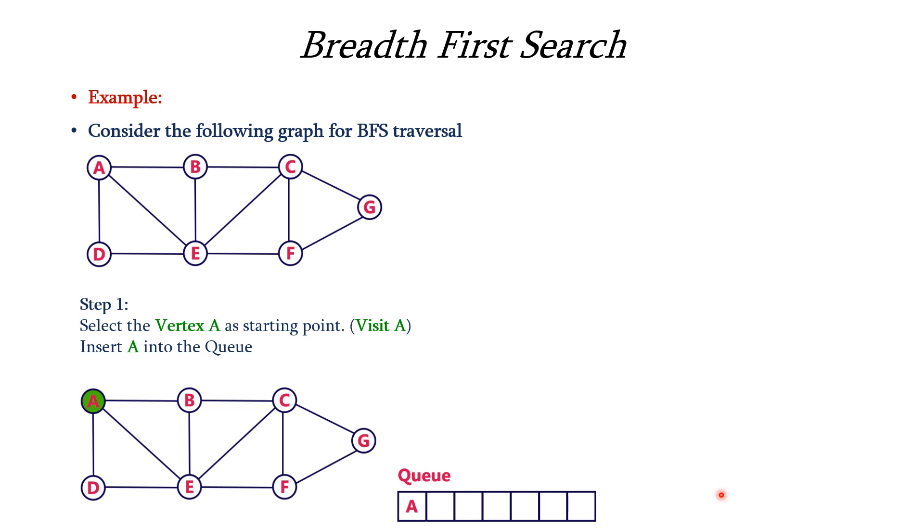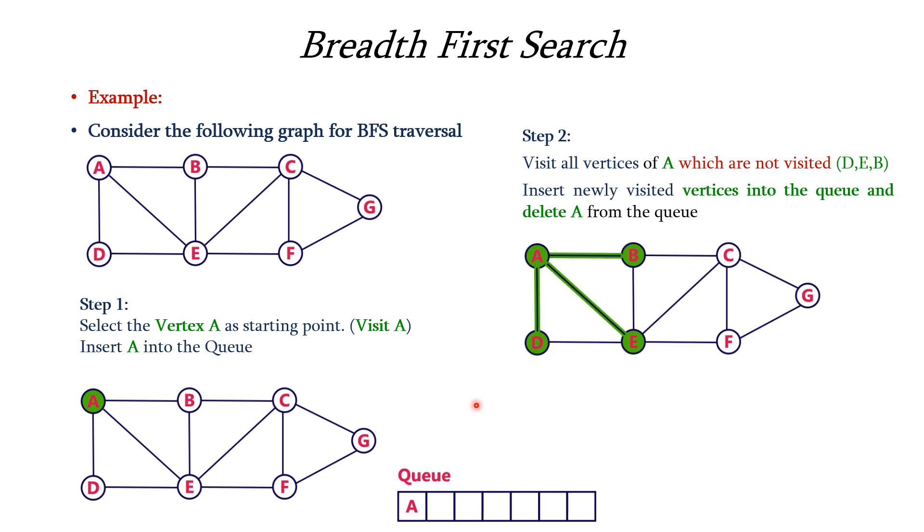Next step is we have to find the adjacent vertices of A which are not visited. So the adjacent vertices of A are B, D, E, all are not visited because they are not shaded with green color. So take all the three vertices and insert into the queue and delete the vertex A because A is having all the nodes as visited now. So this is the graph which indicates that newly visited nodes in the green shades and then the queue which contains D, E and B and A has been removed from the front of the queue.